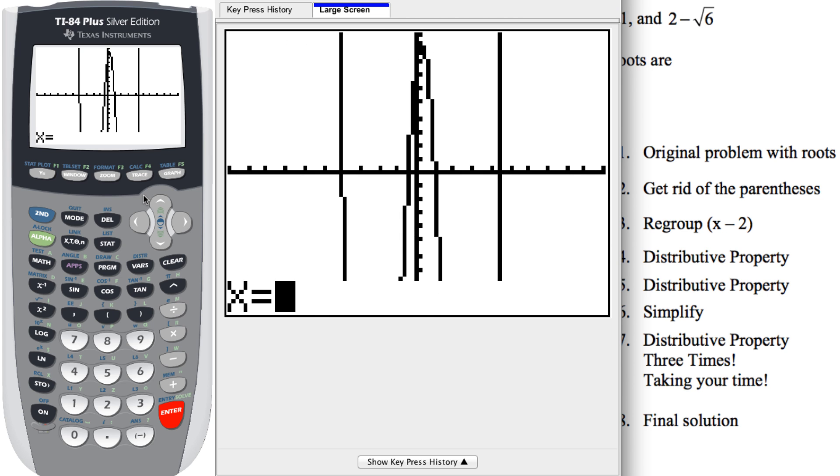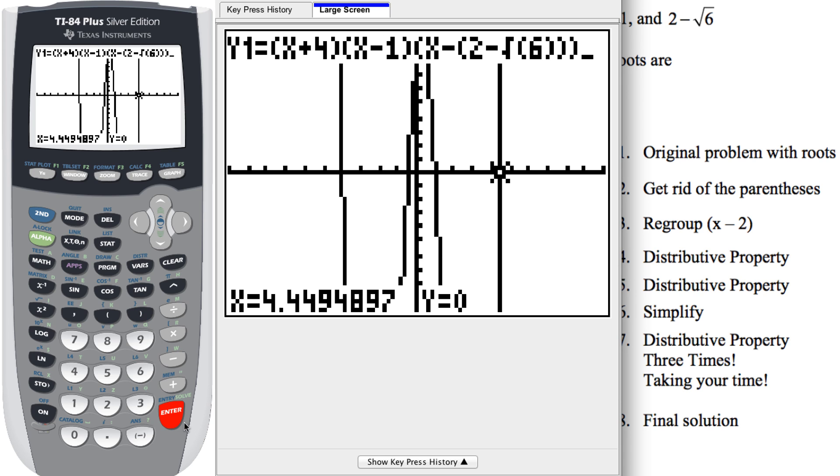Now x equals, we're going to just type in using our graph and calculate. We're going to type in 2 plus square root of 6. So 2 plus second and then x squared button, square root of 6 and then close off the parentheses. Type that in, hit enter and then notice the y equals, it says y equals 0. And our cursor is blinking at that location. So that's my very first 0, 2 plus square root of 6 and that is a 0 because of the value right there. So that's pretty cool. I like it.